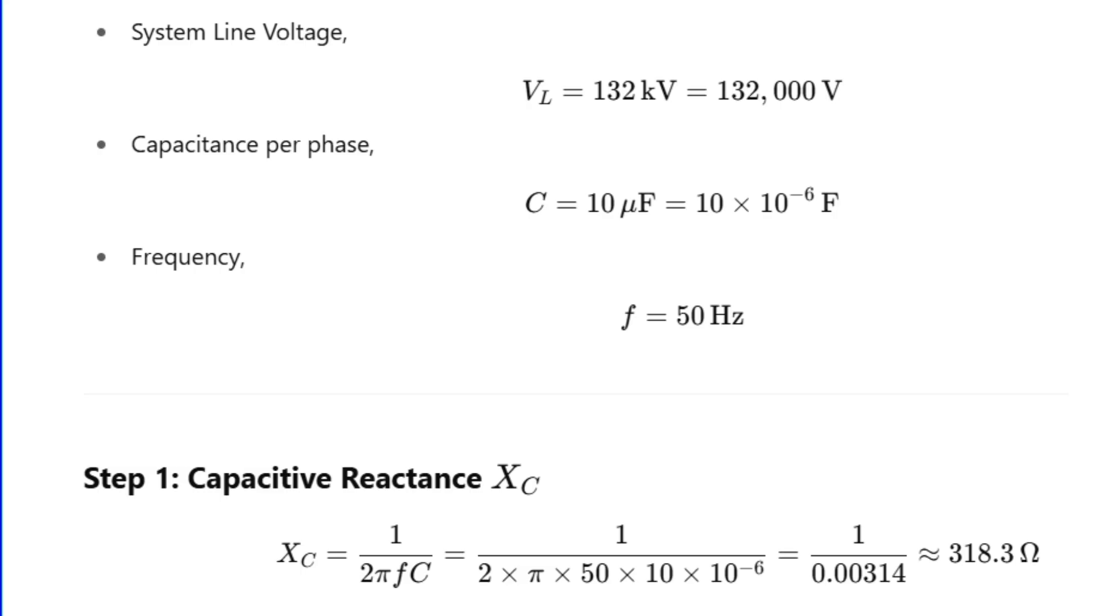Substitute the values: 2π times 50 times 10 microfarads, that's 2π times 50 times 10 times 10 to the power minus 6. That gives XC approximately equal to 318.3 ohms.